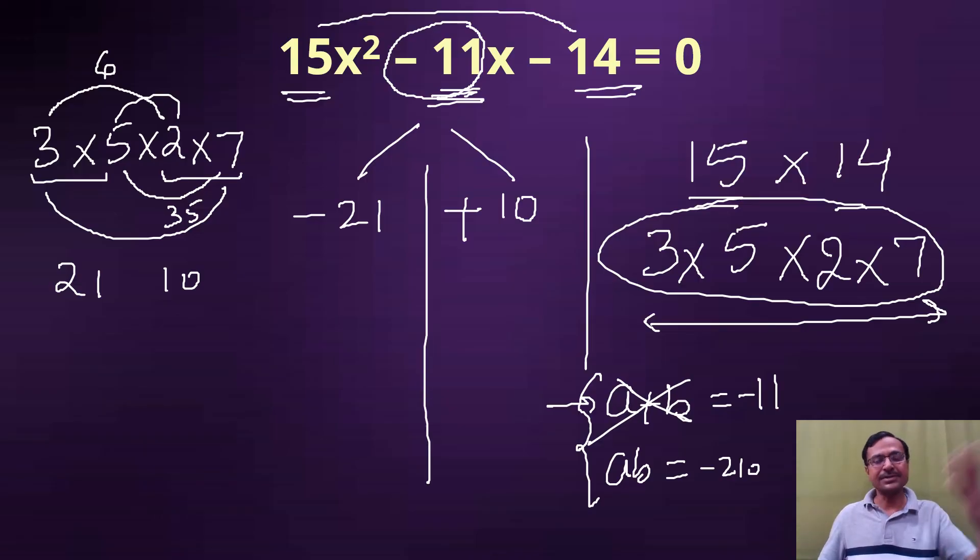And after this, finding the roots that itself is very easy. Once you have split the middle term in five to six seconds, another three seconds you get the answer, the solution. Change the sign: minus 21 becomes 21, plus 10 becomes minus 10.